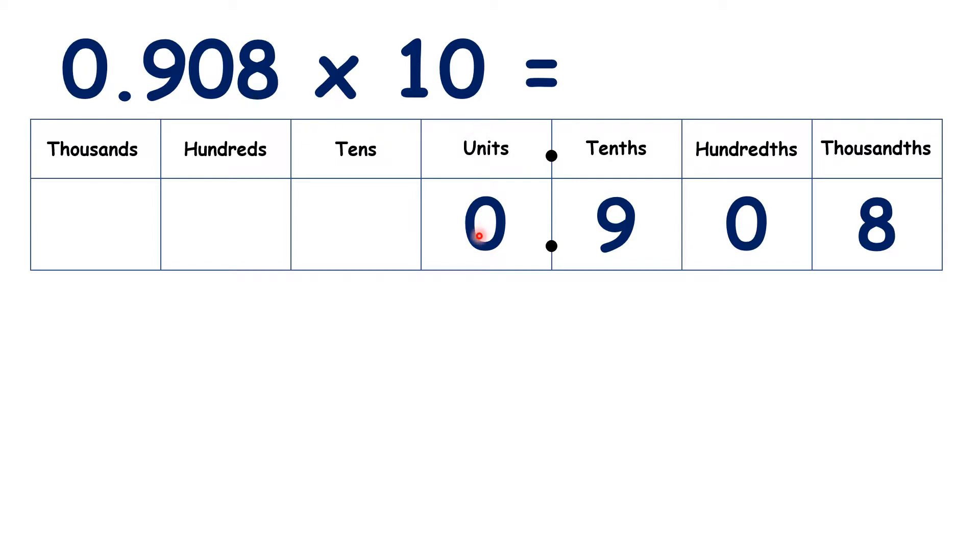For 0.908, we move the digits one place to the left because we're multiplying by 10, so we have 9.08.